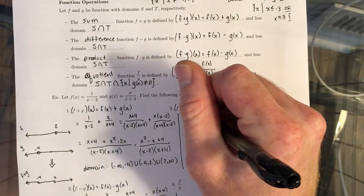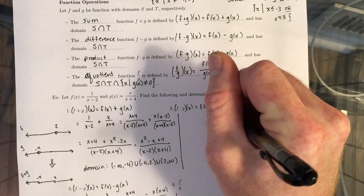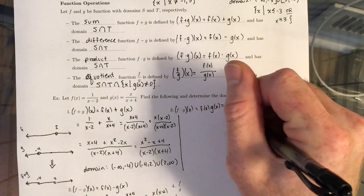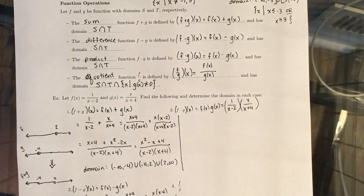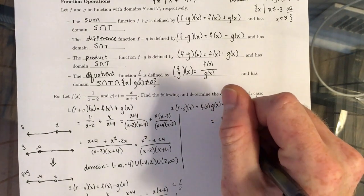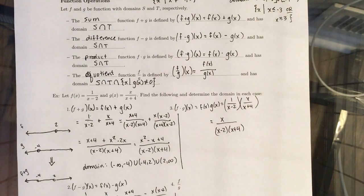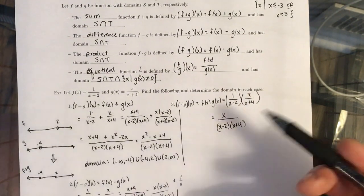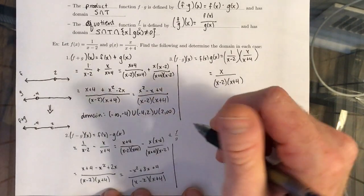Now we want to do f times g. That's point-wise defined as f of x times g of x. Substituting in, we have 1 over x minus 2 times x over x plus 4. Since you're multiplying two fractions, you don't need common denominators - you can just go right across the top, right across the bottom. So we get x over x minus 2 times x plus 4. The domain of the product is the same thing as the domain of the sum and the difference, so you have to get rid of the 2, get rid of the negative 4, everything else is good.